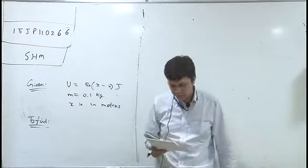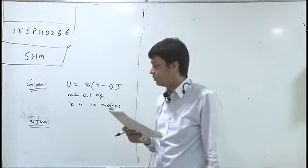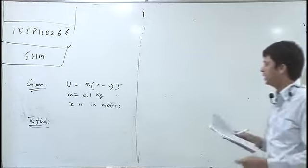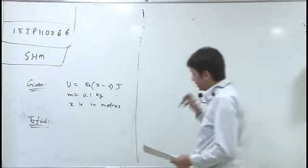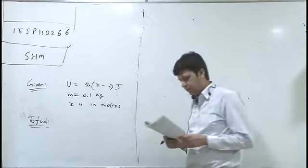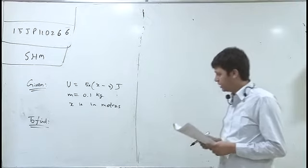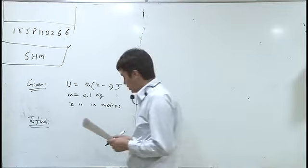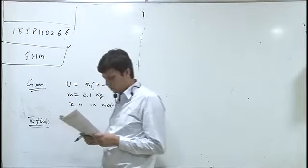Hello dear students, today we are going to discuss question code 15JP110266, which means potential energy is U equals 5x times x minus 0. Mass m equals 0.1 kg is given, and x is in meters.